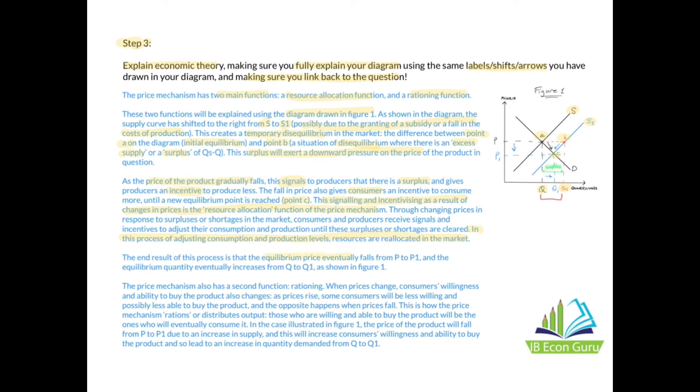The end result of this process is that the equilibrium price eventually falls from P to P1, and the equilibrium quantity eventually increases from Q to Q1, as shown in Figure 1. The price mechanism also has a second function—rationing. When prices change, consumers' willingness and ability to buy the product also changes. As prices rise, some consumers will be less willing and possibly less able to buy the product, and the opposite happens when prices fall. This is how the price mechanism rations or distributes output—those who are willing and able to buy the product will be the ones who eventually consume it. In the case illustrated in Figure 1, the price of the product will fall from P to P1 due to an increase in supply, and this will increase consumers' willingness and ability to buy the product and so will lead to an increase in quantity demanded from Q to Q1.